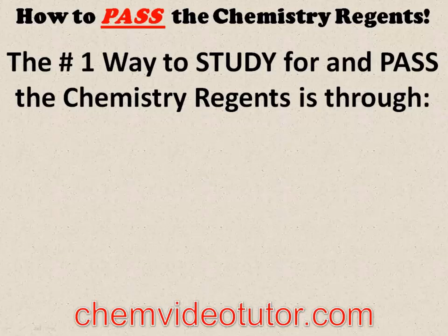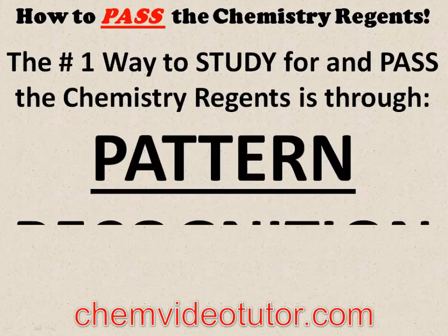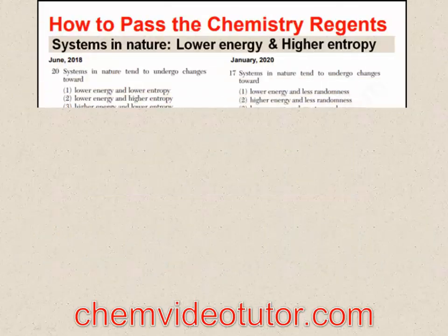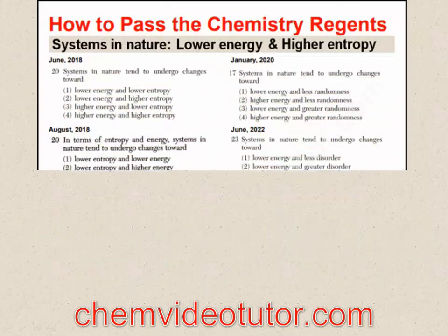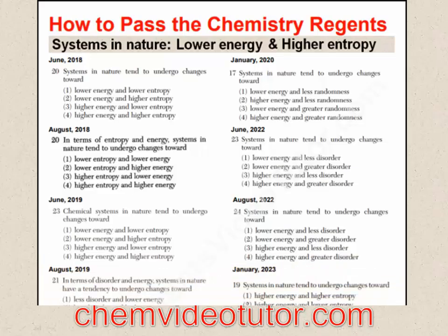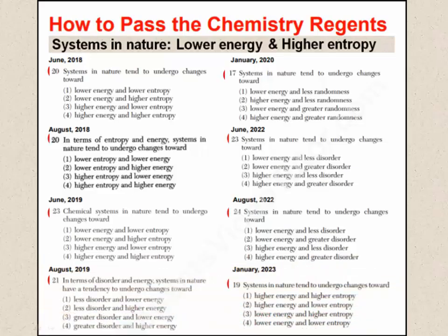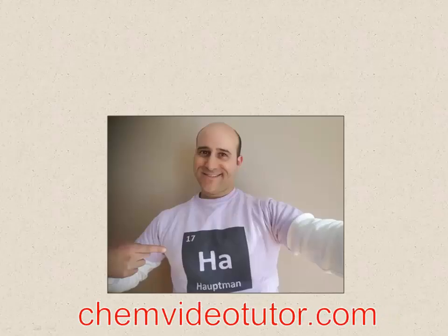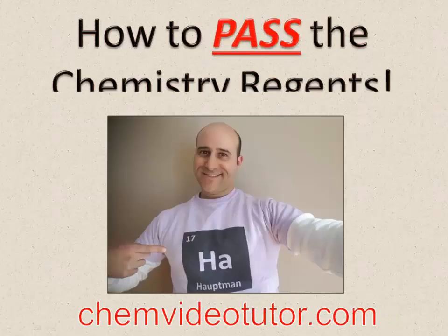The number one best way to study for and pass the chemistry regents is through pattern recognition. That's because the chemistry regents loves to ask the same questions over and over again, sometimes right around the same question numbers, making it almost impossible to fail. My name is Guy Houtman from ChemVideoTutor.com, here to show you how to pass the chemistry regents.